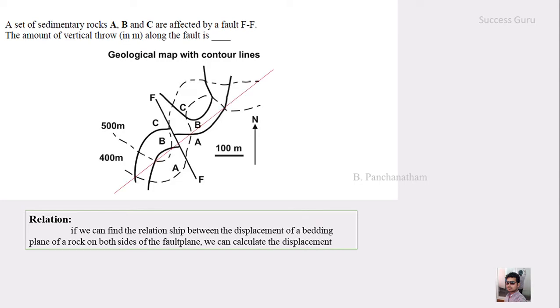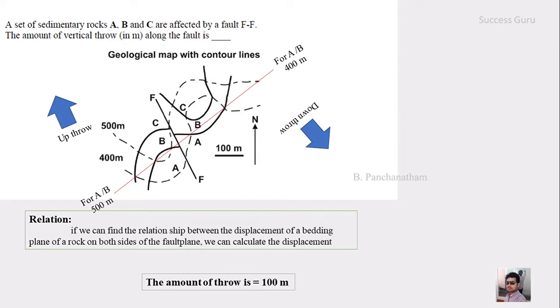And this strike cuts the bed A and B in this point. And this strike value will be 500 for this side. In the same strike, the same outcrop AB is cut through at this point. And this contour value is 400. Therefore, the strike will be 400 meter. From this itself, you can find out that this side is the up thrown side. And this side is the down thrown side. And the difference is 500 minus 400 is equal to 100. Therefore, the amount of throw is 100 meter.